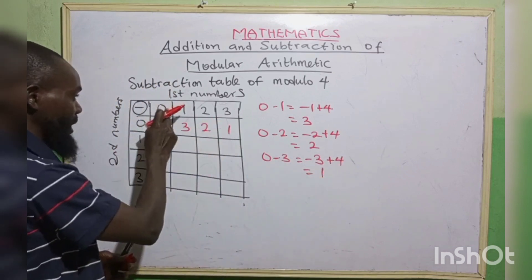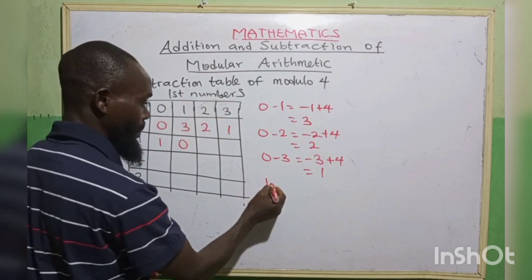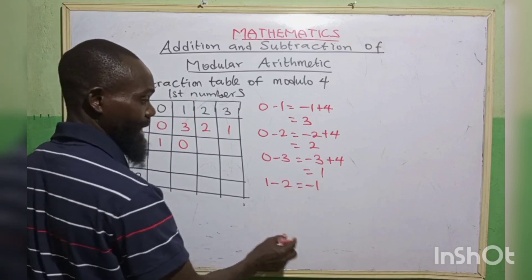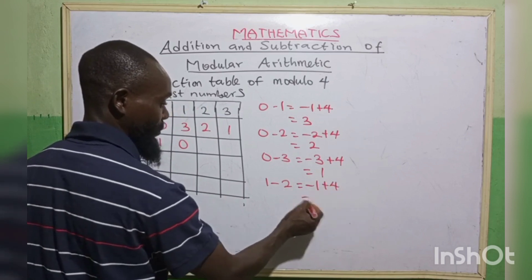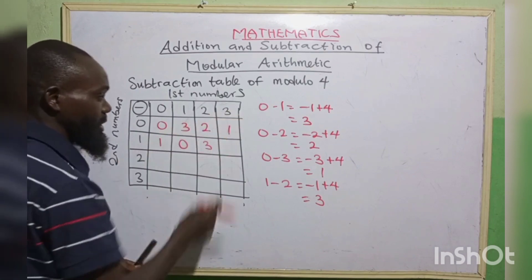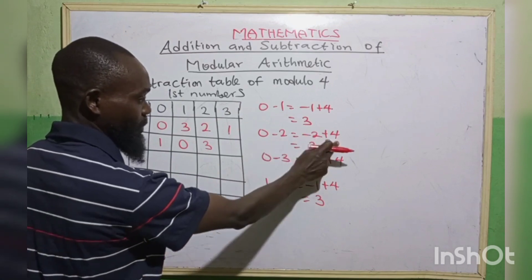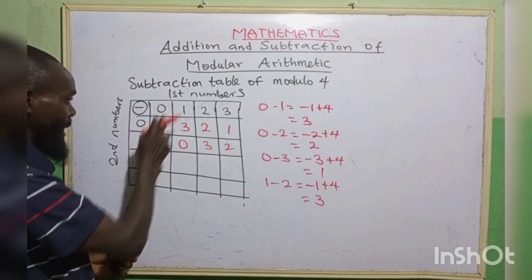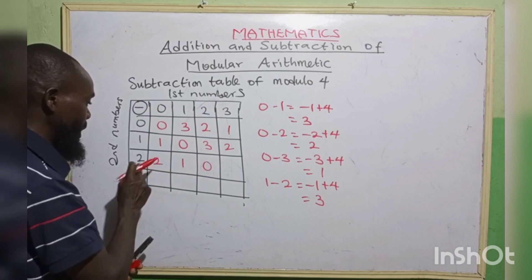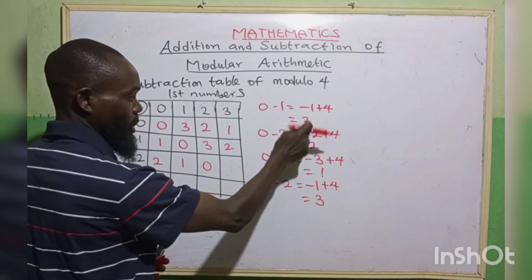1 minus 0 is 1. 1 minus 1 is 0. 1 minus 2 is minus 1 — we cannot write the minus, so we add 4: minus 1 plus 4 gives 3. 1 minus 3 gives minus 2 — add 4 to get 2. For the row starting with 2: 2 minus 0 is 2. 2 minus 1 is 1. 2 minus 2 is 0. 2 minus 3 is minus 1 — add 4 to get 3.